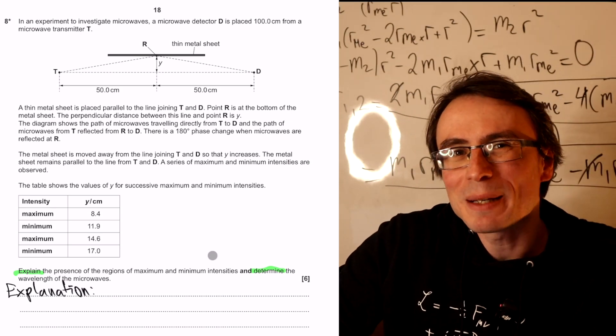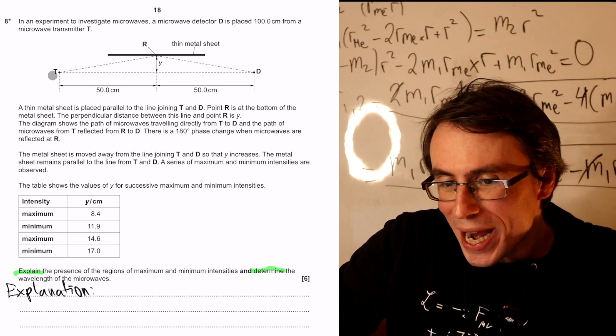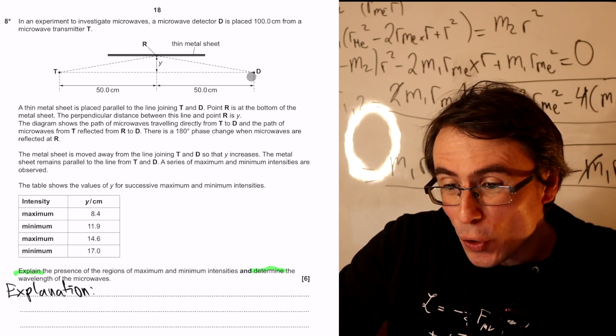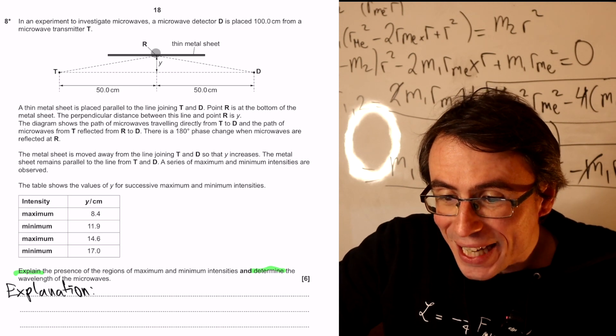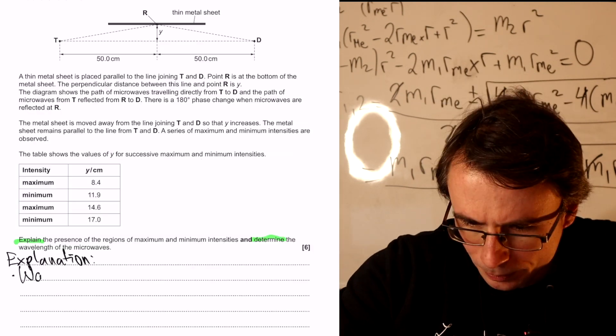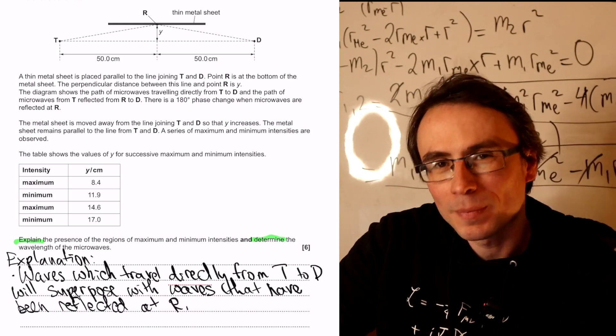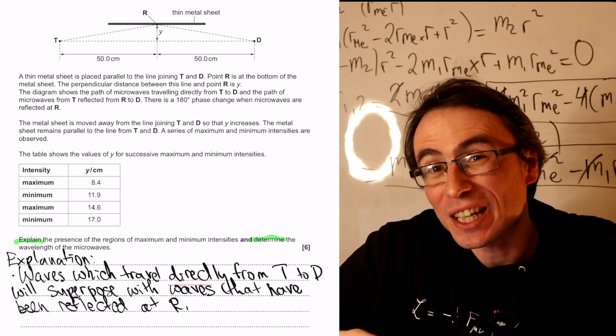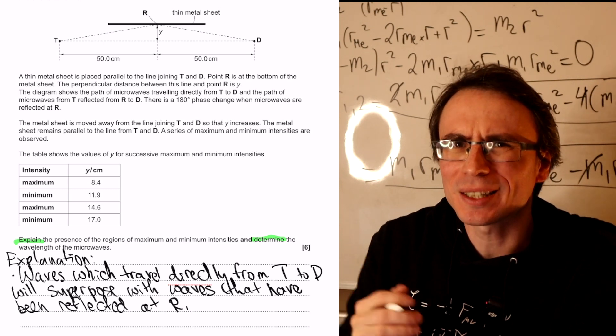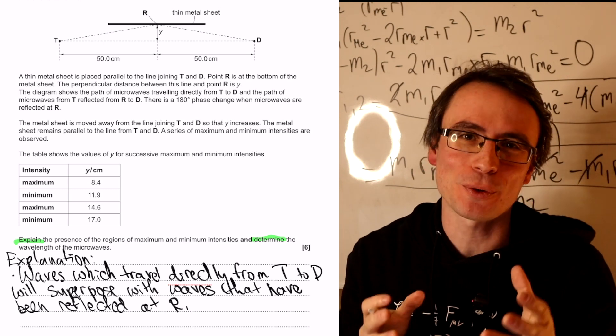I'm going to make sure that I'm using plenty of keywords. So waves that are going directly from t to d will end up superposing with waves that have been reflected and are taking this path. What is important is that initially those two waves are actually coherent. How do we know that they're coherent? Well, they've been emitted from the same source.